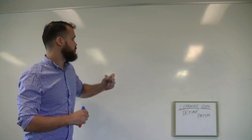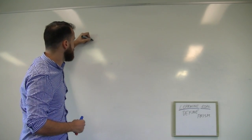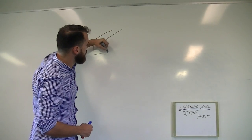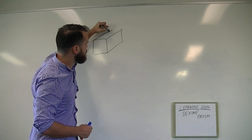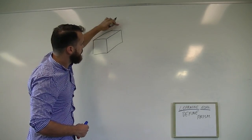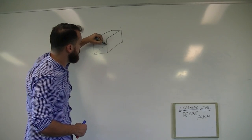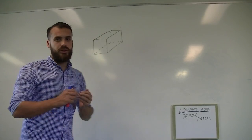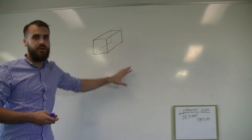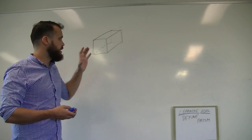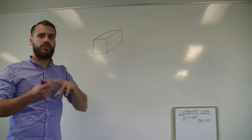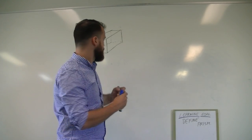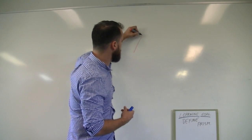I'll draw us one prism so we can see what it looks like. When you're going to do this unit, it's probably pretty important that you learn to draw in 3D. Now we have here a rectangular prism. I'll draw one more thing here before we move on so you can see a few different types of prisms. Here's a triangular prism.